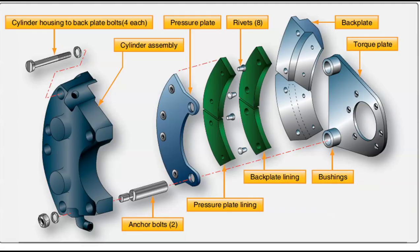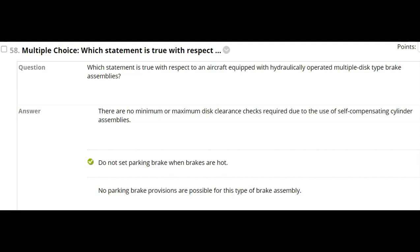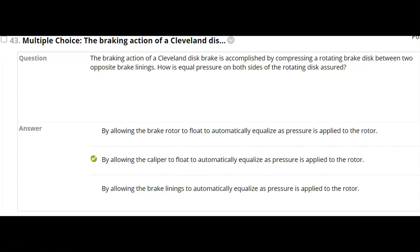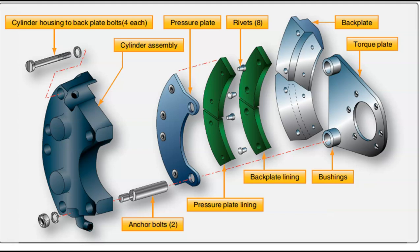Now we also have a Cleveland brake, and the Cleveland brake, that's what we took off of the 172. Now the thing to know about the Cleveland brake, this is a little airplane, is that these, see these anchor bolts? This thing floats. And if you remember, we took off this, what we call the back plate. To remove it, you guys removed that when we took the brakes apart. You took off two bolts there, and then you slid this whole assembly off with your hand. So back to this question: The braking action of a Cleveland is accomplished by compressing the rotating brisque between two opposite brake lines. How is equal pressure on both sides of the rotating disc assured? Well, it's by allowing the caliper to float. That's how it's done.